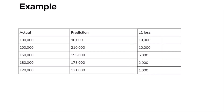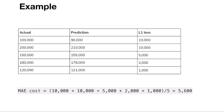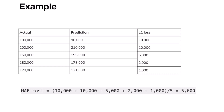Now if I want to calculate the total cost across all five examples, I take the average — that is mean absolute error, which is the average of absolute differences.